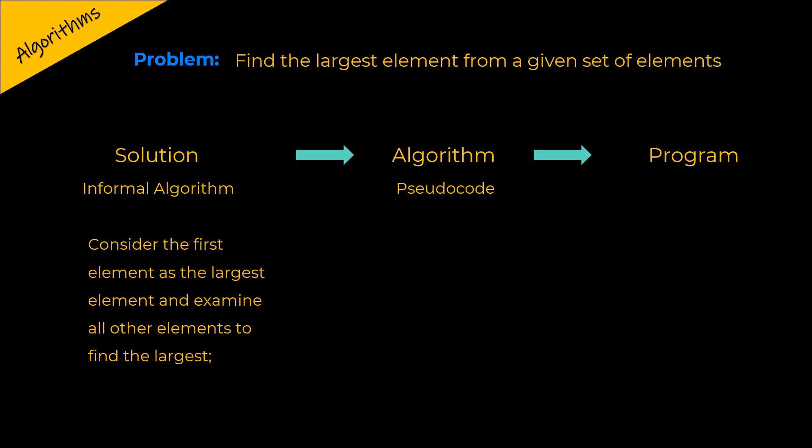Then, finally, to implement an algorithm, a programmer can use any programming language, such as C, or C++, or Java, or Python, to convert an algorithm written in pseudocode to an executable program.